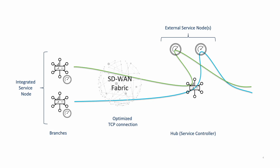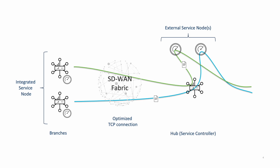AppQE is scalable with different deployment scenarios supported. An integrated service provides a one-box solution for deploying branch services. External service nodes are decoupled from intercepting edge routers or service controllers. This deployment is typically found in data centers and hubs. The redirection of flows based on application traffic is achieved using data policy.